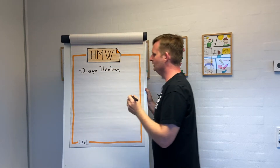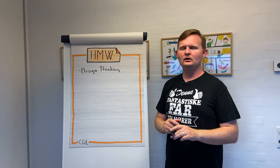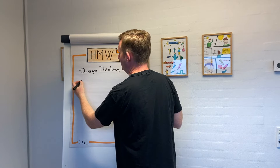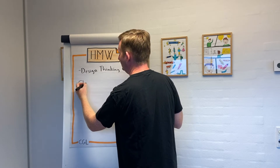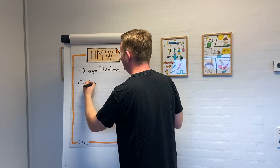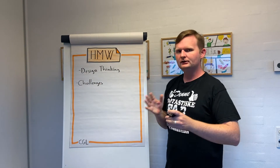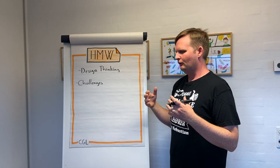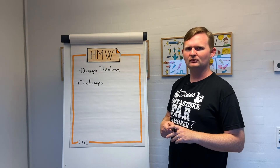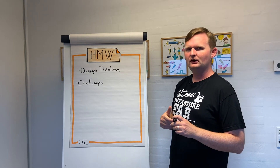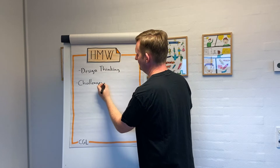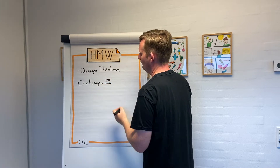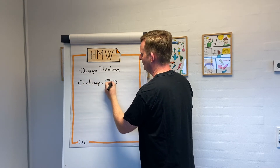Let's imagine we've had a retrospective and people have come up with a lot of impediments — things that are not working, some challenges. The real question is: how can we take these challenges into something we can work with, without being focused on a specific solution? How can we keep curiosity about what the actual problem is? This is where we can use 'How Might We' as a tool to rephrase these challenges into questions instead.